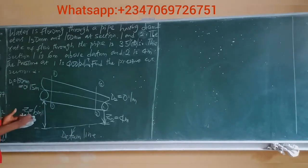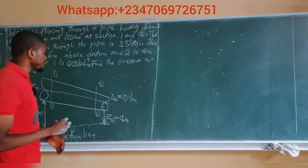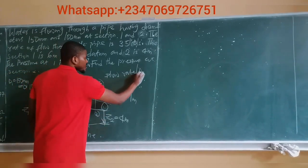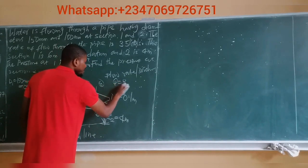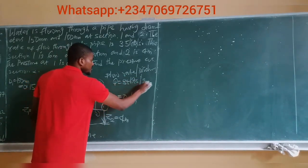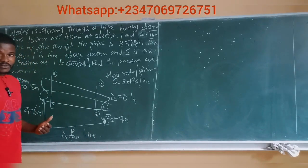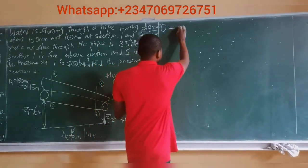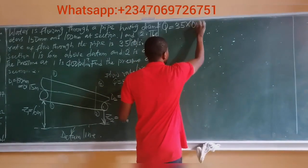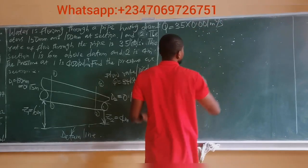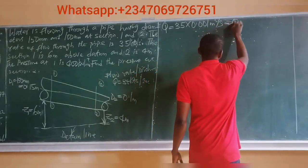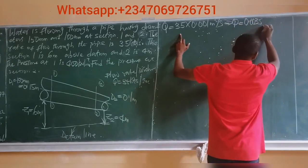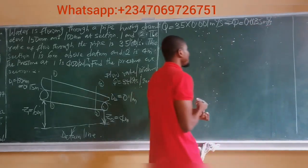The rate of flow through the pipe is 35 liters per second. So flow rate or discharge Q is given as 35 liters per second. We need to convert this to meter cube per second. Q is equal to 35 multiplied by 0.001, which becomes 0.0035 meter cube per second.